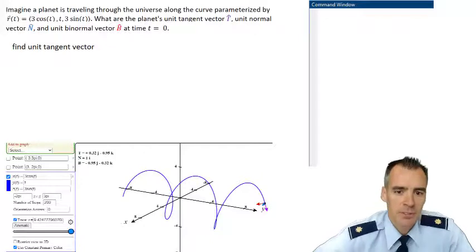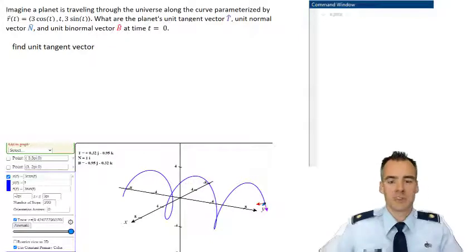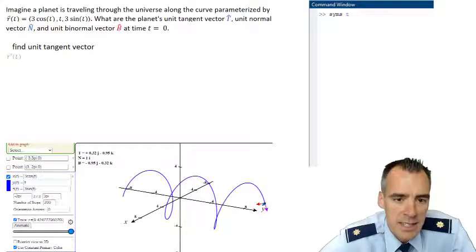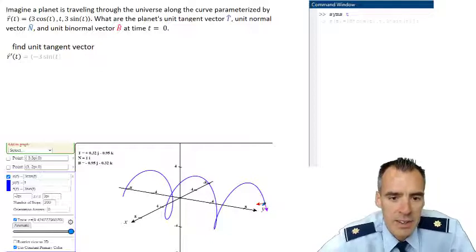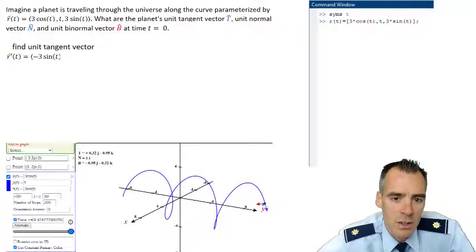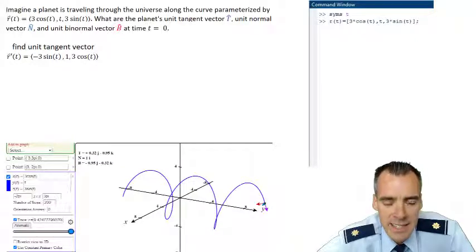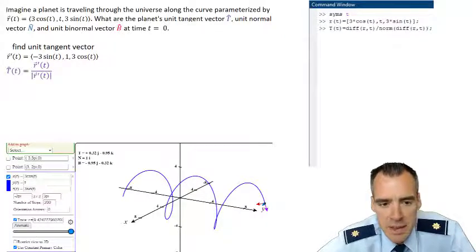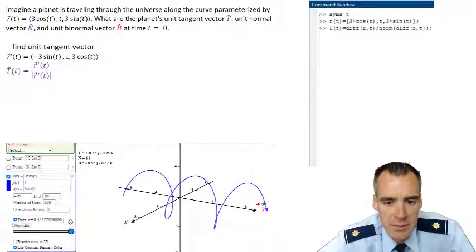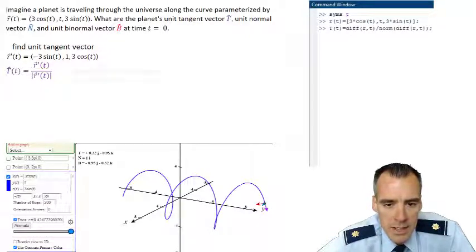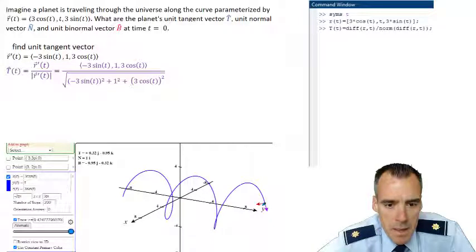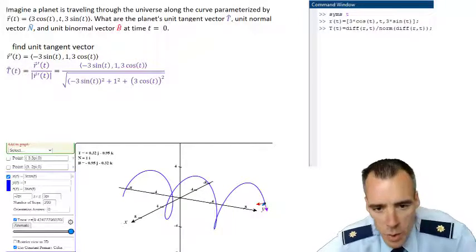To find T, we first have to find this space function's derivative. So R' of T is going to be the vector negative 3 sine of T, 1 and 3 cosine of T. In order to find the unit tangent vector equation, we have to take that derivative and divide it by the magnitude of that derivative, which we can find here.